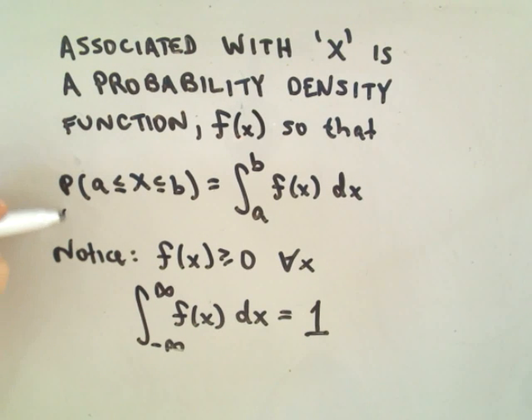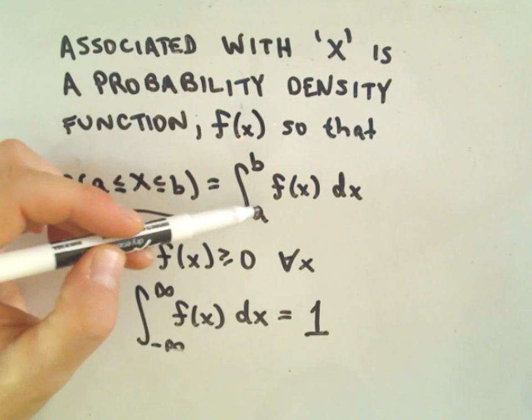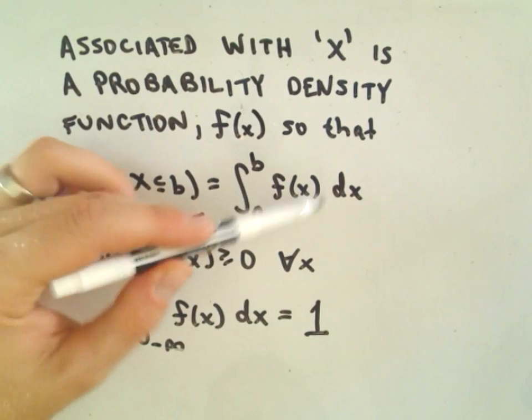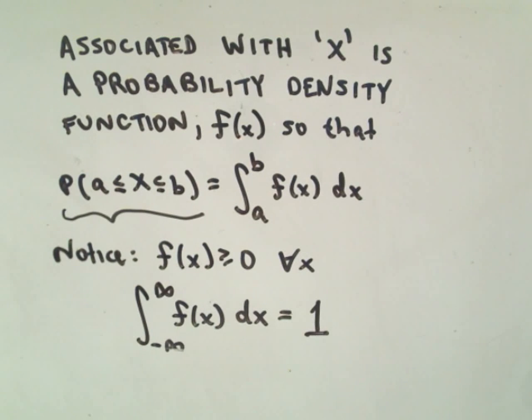The important thing is to basically calculate a probability that your random variable is between two particular values. What you do is you integrate over the probability density function and those values turn into your limits of integration.